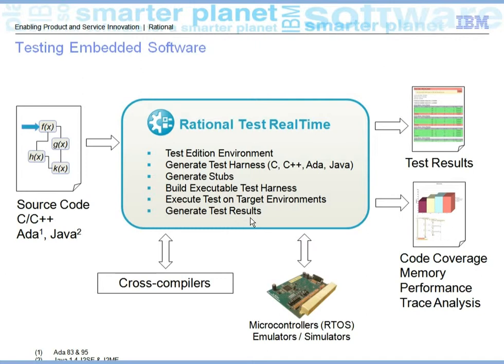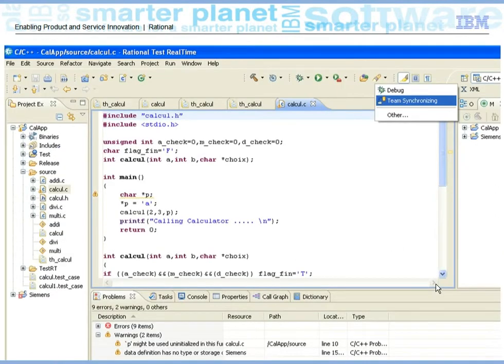The input to this testing tool is C, C++, Ada, or Java. Once these are provided to the testing tool, it generates the test edition environment, generates test harness, and generates stubs. It then builds the executable using a cross compiler and executes it on the given target environment or any microcontroller, and generates test results.